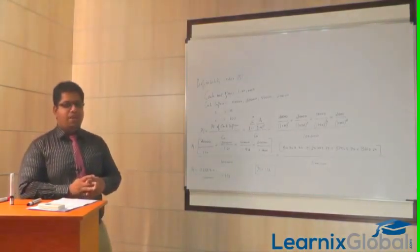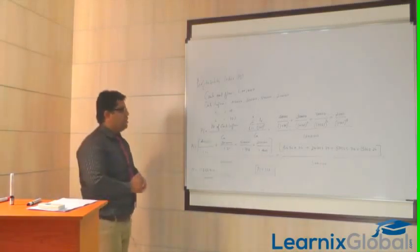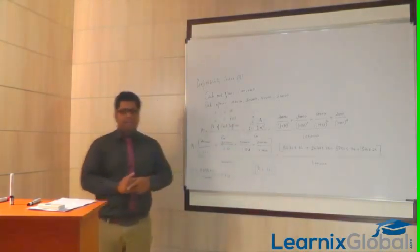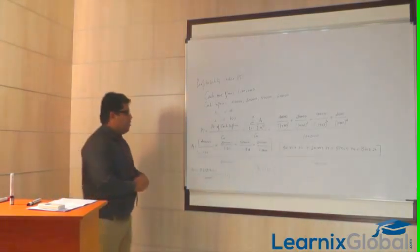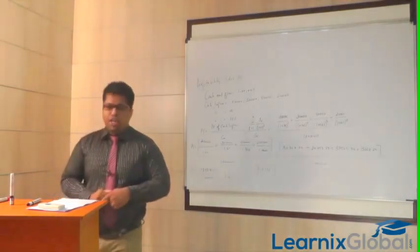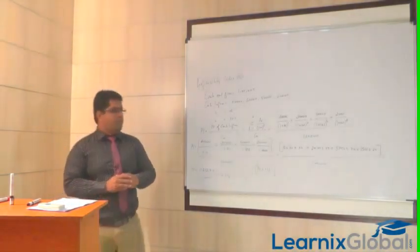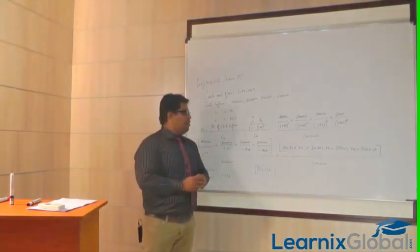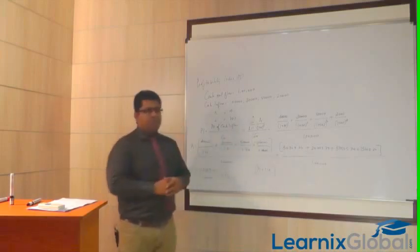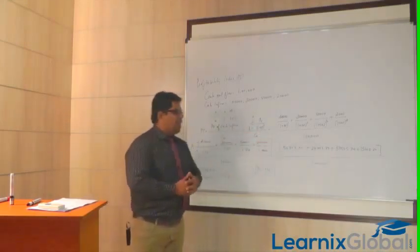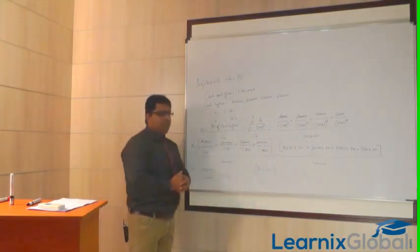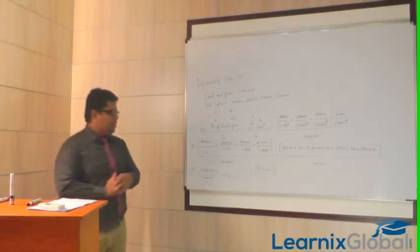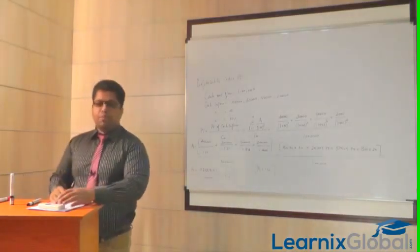To summarize: the project has an initial cash outflow of one lakh and generates 40,000 in year one, 30,000 in year two, 50,000 in year three, and 20,000 in year four, with a 10% interest rate. Using the present value of uneven cash flow formula and dividing by cash outflow, we arrive at a profitability index of 1.12. Since it is more than one, we accept the project. That concludes the profitability index topic.